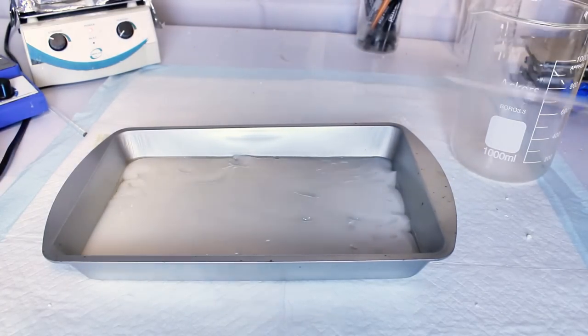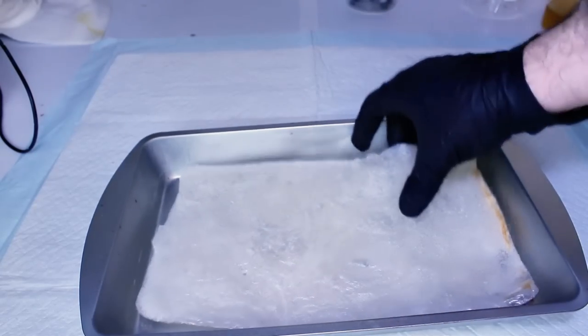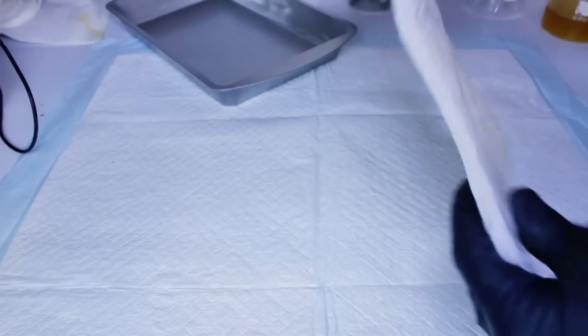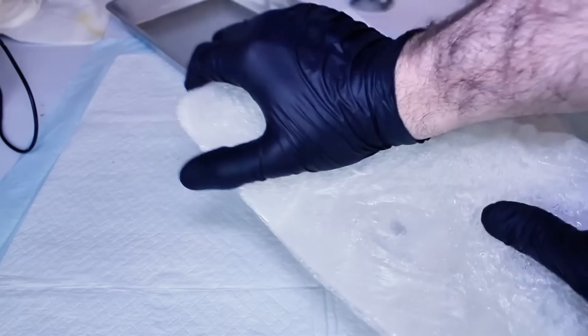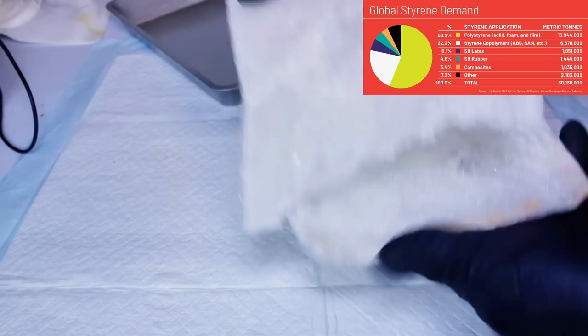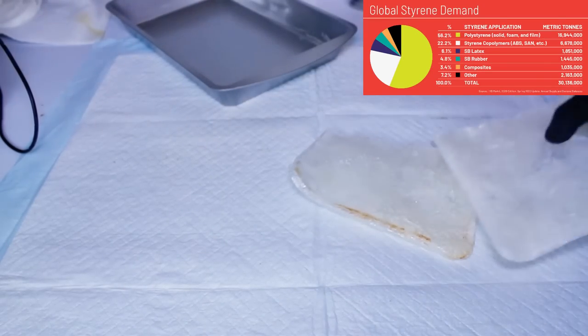When polystyrene is recycled, the only real viable route is by thermal depolymerization to its monomer, styrene. Styrene can then be upcycled back into polystyrene, or it can be made into countless other chemicals, which is what I'm going to demonstrate today.